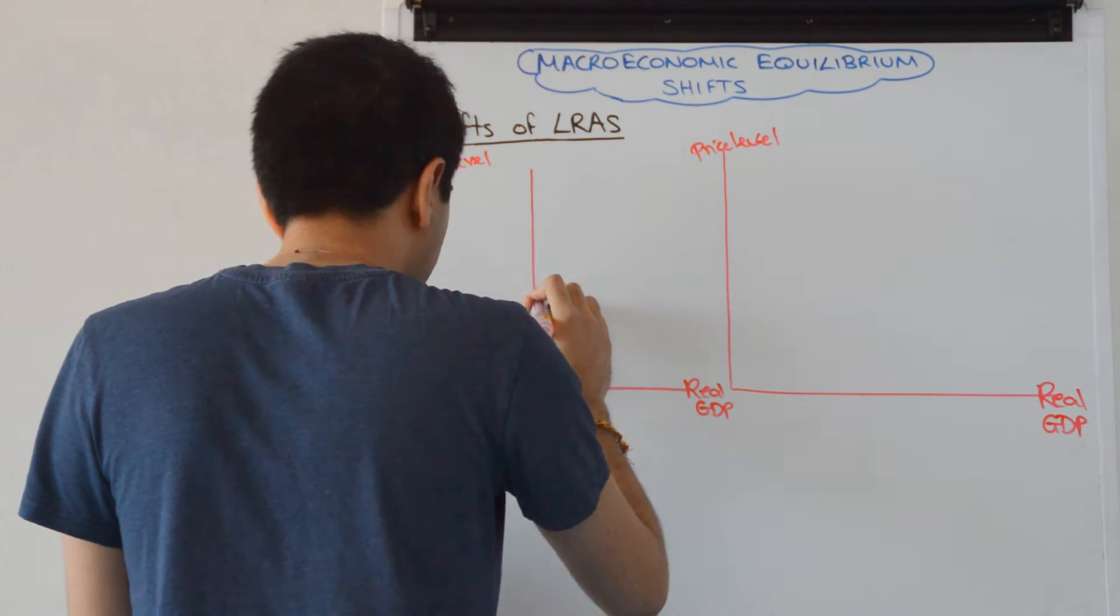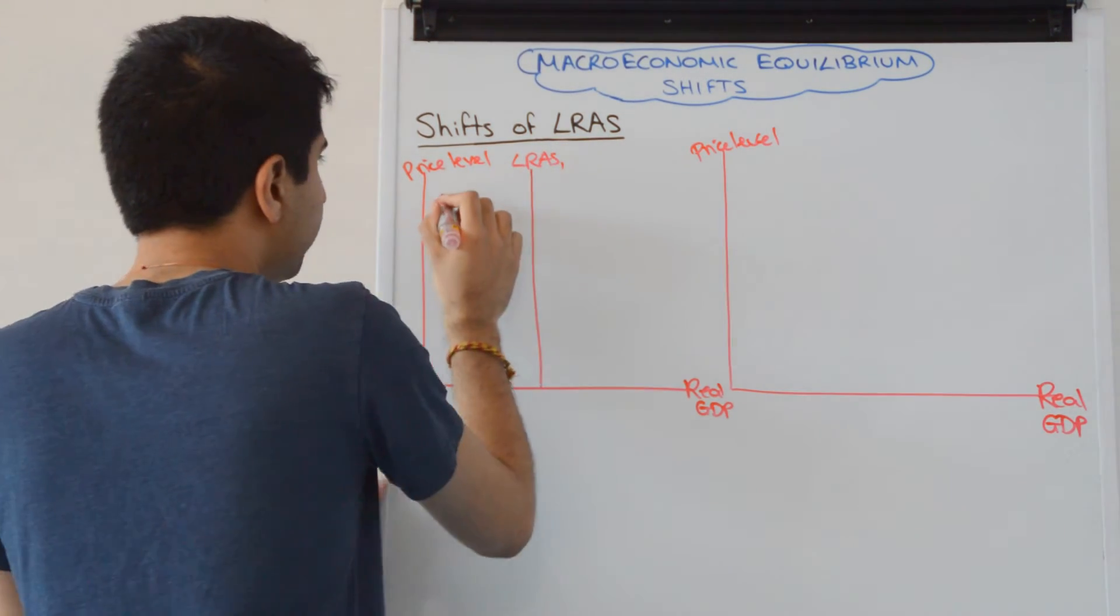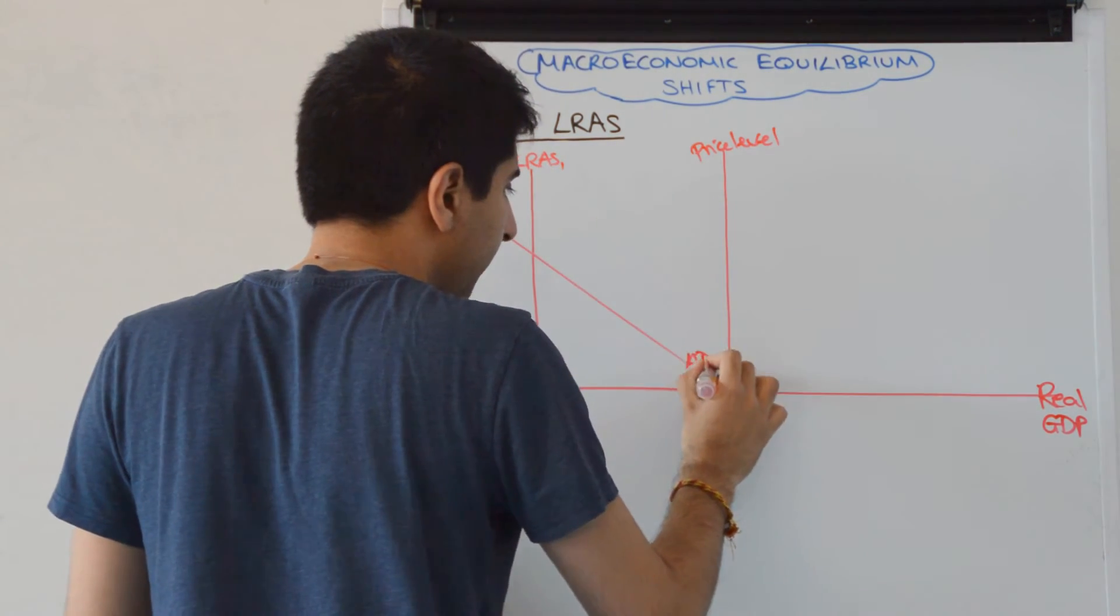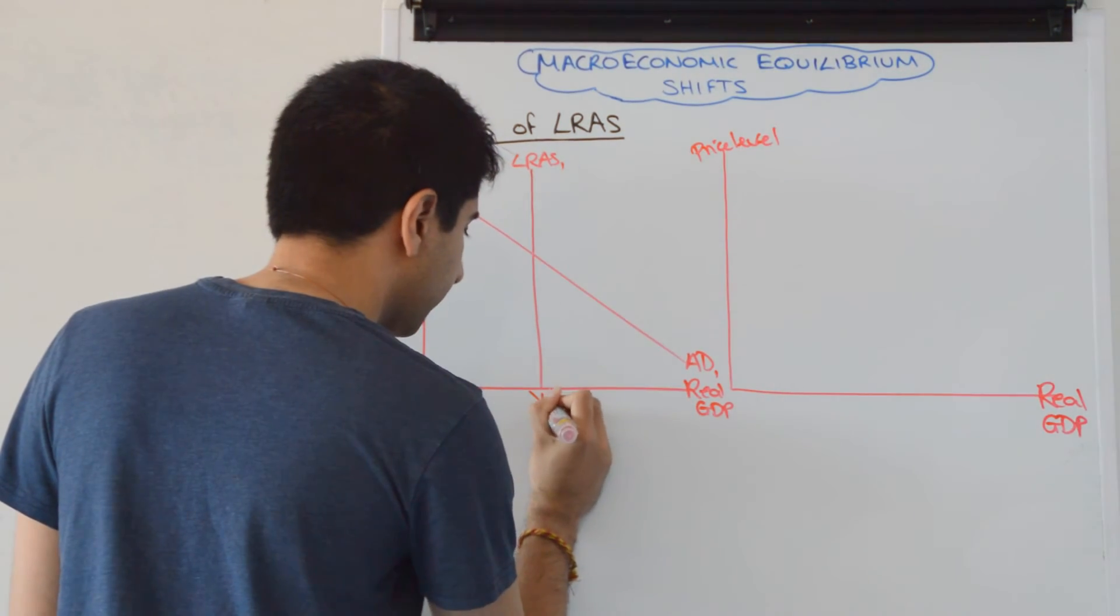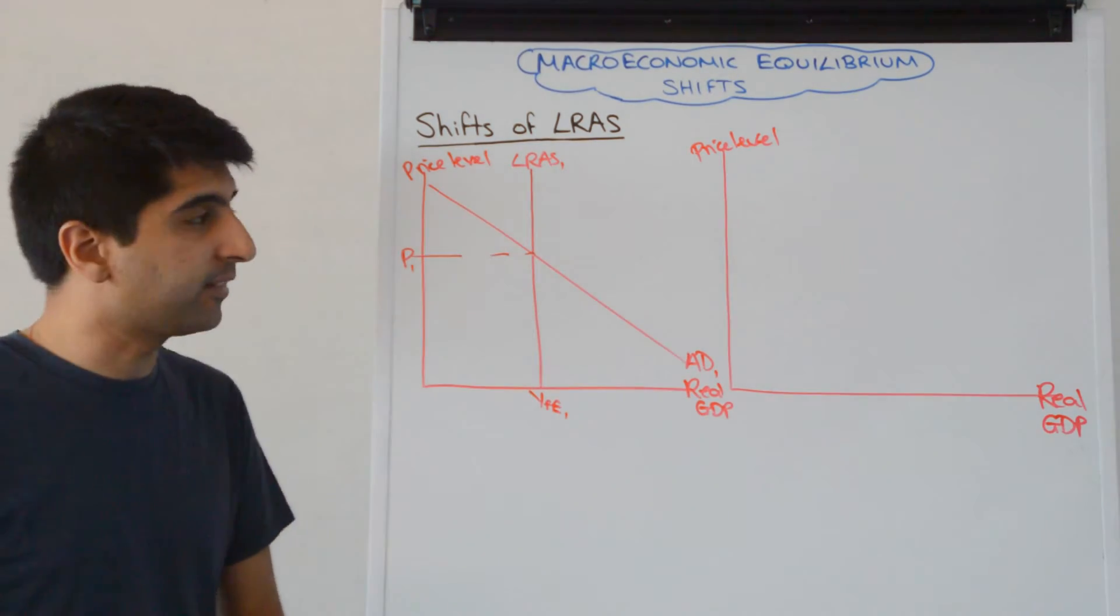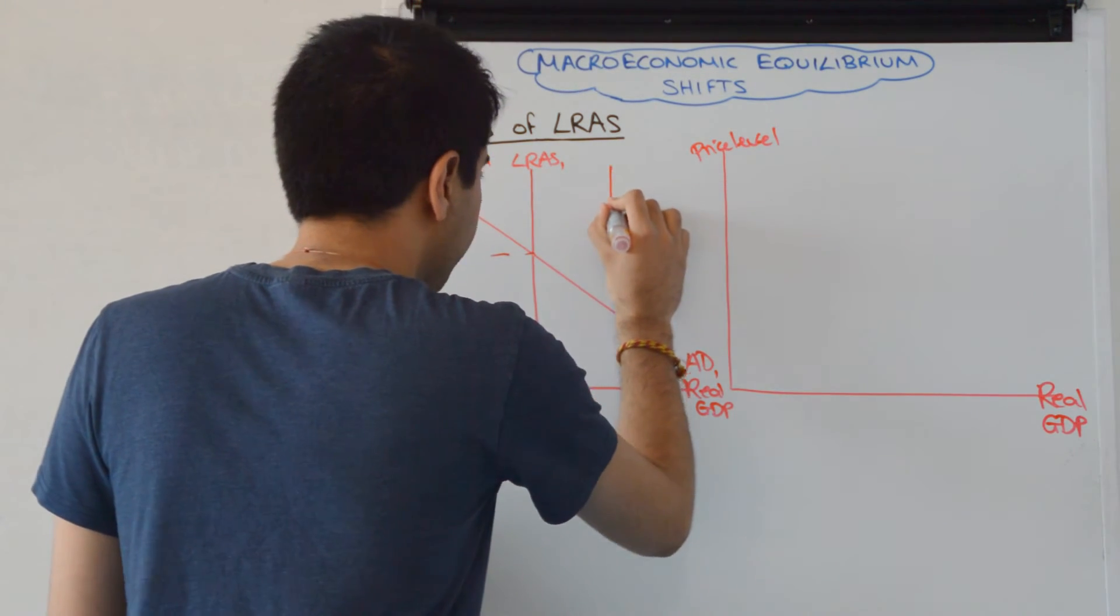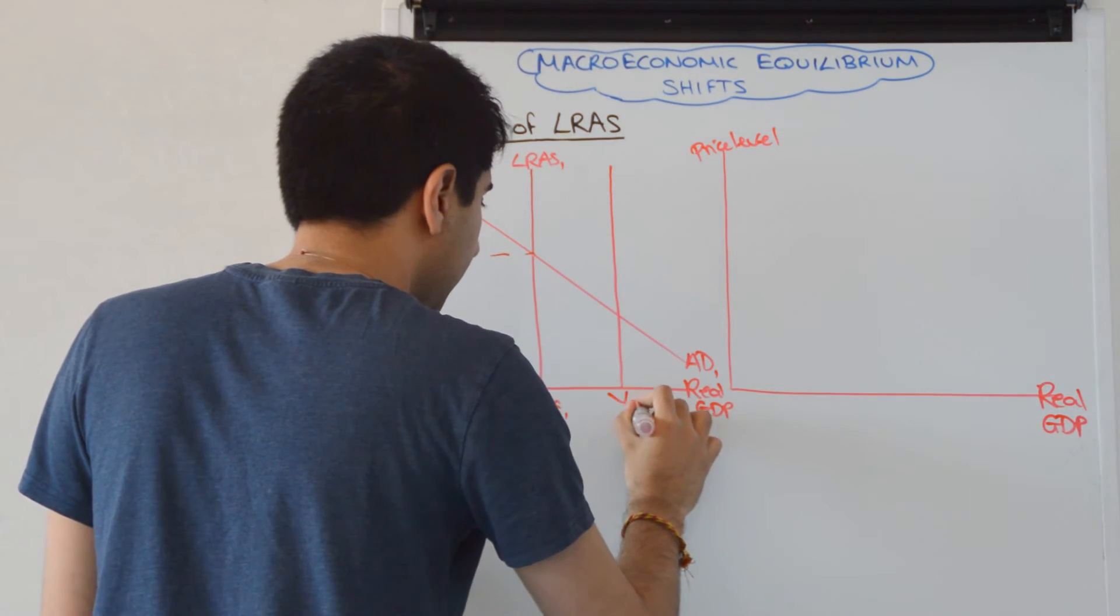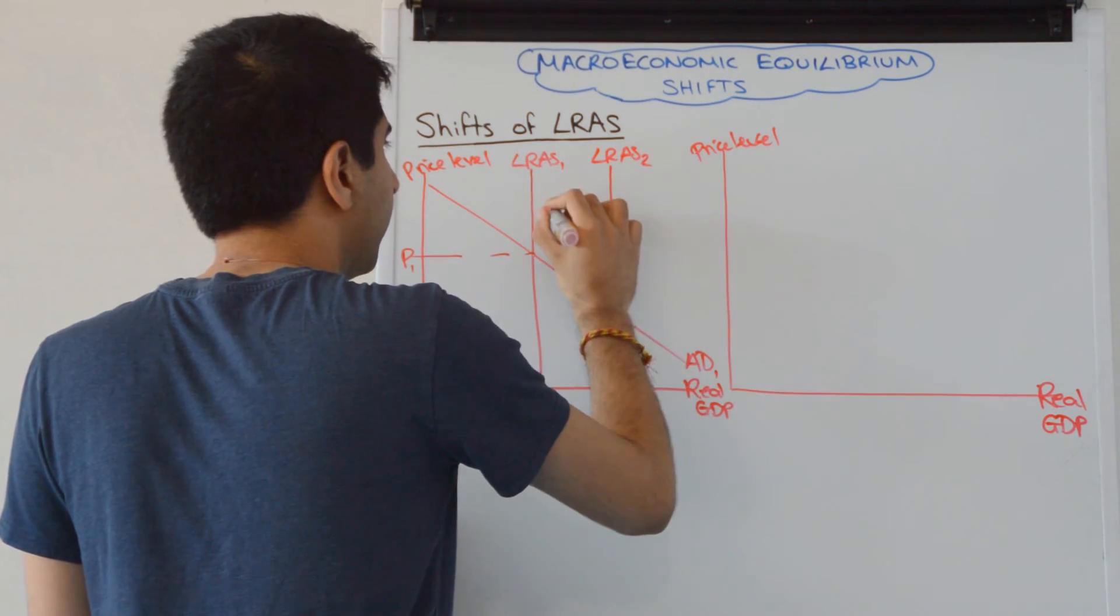We'll start with long-run aggregate supply, we know it's vertical like that, and just have an AD curve, so simplifying it like that. We've got YFE there, and we've got our price level there at P1, and then just shift LRAS. Let's say we're shifting LRAS to the right, in which case our new LRAS is going to look like that.